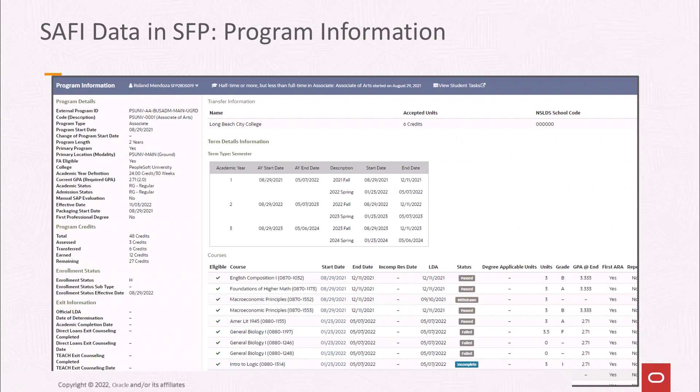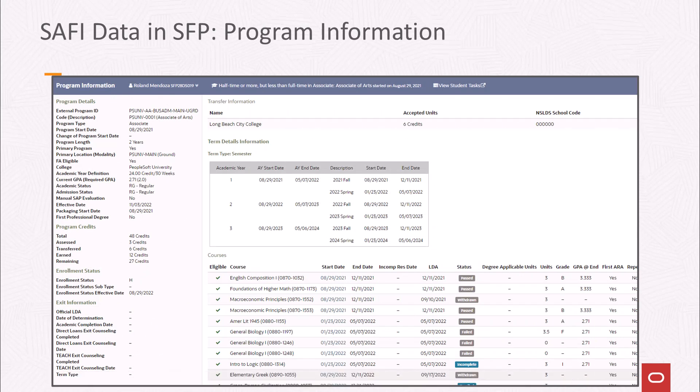CS course drops and program changes ultimately affect the SFP student program record. These changes can trigger processing in SFP that can update a student's financial aid award. Before we look at how CS-SFP integration handles these types of changes, it's helpful to take a closer look at an SFP student program record.